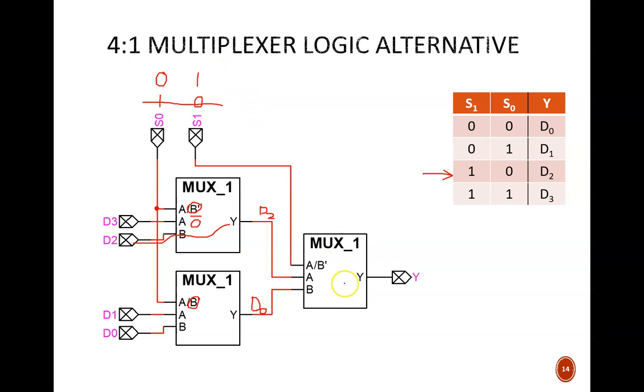Now we reach the final MUX. Here, the SELECT input is 1, which clearly is choosing A. A holds the value of D2, so it is D2 that makes it to the final output, which is what we expected.